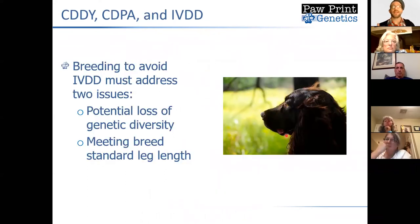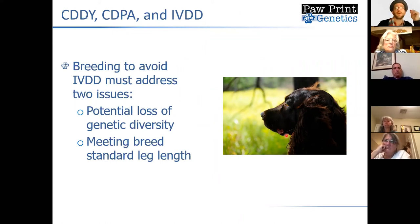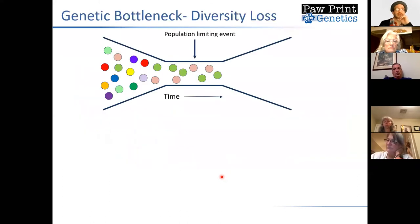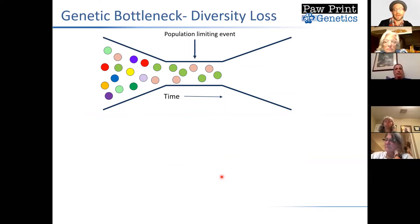If we want to try to eliminate this mutation, there are two major things we have to consider: the potential loss of genetic diversity if we remove a large number of dogs that have this mutation, and secondly, the breed standard leg length. In some cases there may be situations where we need to consider a modification to the breed standard. First, to avoid potential loss of genetic diversity, we have to understand why genetic diversity is so important and what could happen if we were to eliminate a large number of dogs.